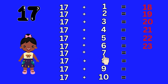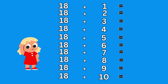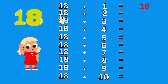17 plus 7 equal to 24. 17 plus 8 equal to 25. 17 plus 9 equal to 26. 17 plus 10 equal to 27. Addition table 18. 18 plus 1 equal to 19. 18 plus 2 equal to 20. 18 plus 3 equal to 21.